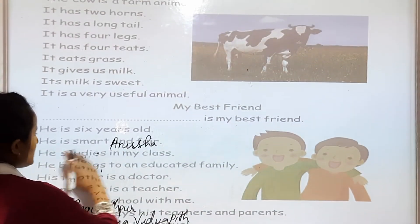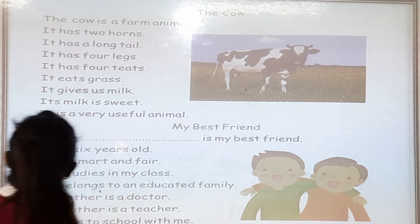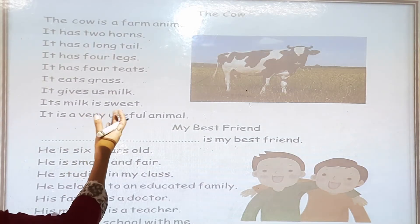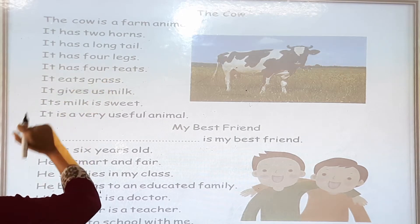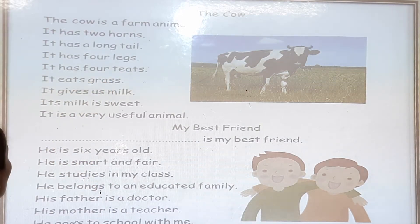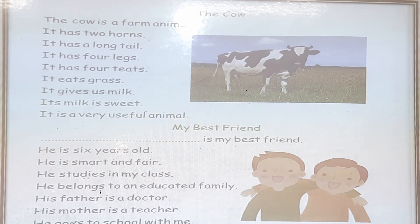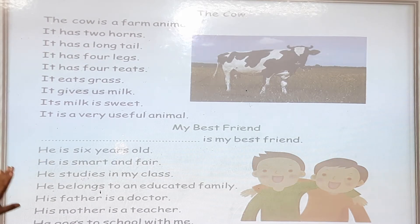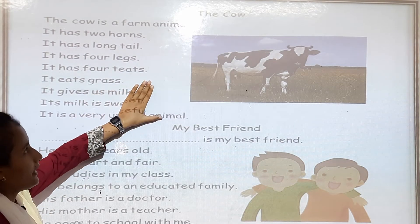In the next page there are some examples you can see. The cow — the cow is a farm animal. It has two horns. It has a long tail. It has four legs. It has four teeth. It eats grass. It gives us milk. It is a very useful animal. So we have learned about the cow because it is a farm animal.